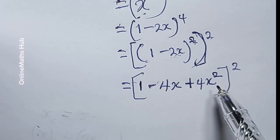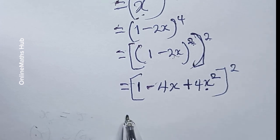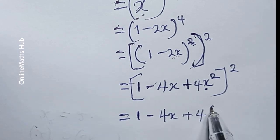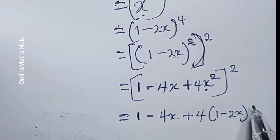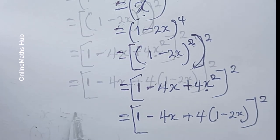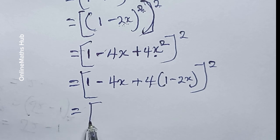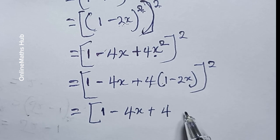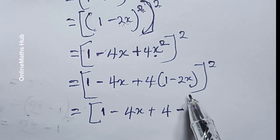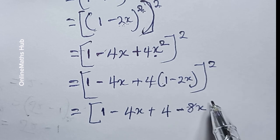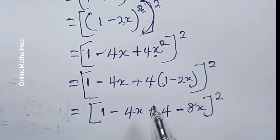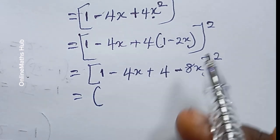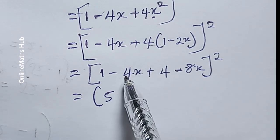Since we have the expression 4x squared, I'm going to replace that using x squared equals 1 minus 2x. So I'm having 1 minus 4x plus 4 into (1 minus 2x), all raised to power 2. I'll open that bracket: 4 times 1 is 4 and 4 times minus 2x gives minus 8x, all raised to power 2.